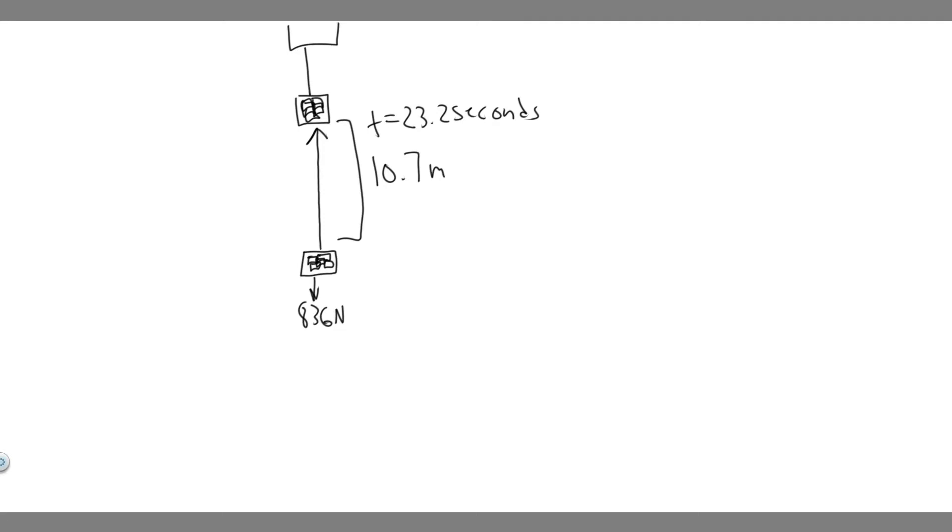In this problem we're told a small motor runs a lift that raises a load of bricks weighing 836 newtons to a height of 10.7 meters in 23.2 seconds. Assuming that the bricks are lifted with constant speed, what is the minimum power the motor must produce?